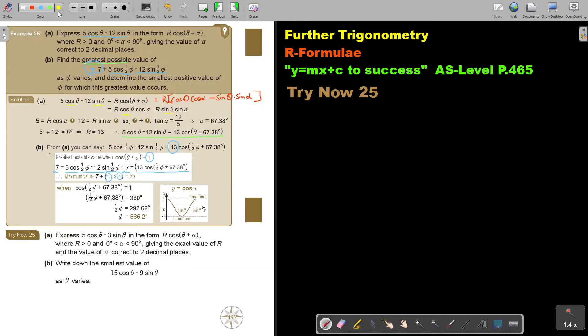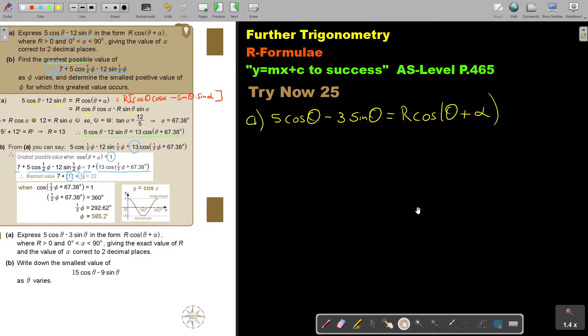Let's start. Number A. Express 5 cos theta minus 3 sin theta, and they always give me that, I can write it as an equation, theta plus alpha. And then I'm just going to express it and find the value of R and the value of the acute angle correct to two decimal places.